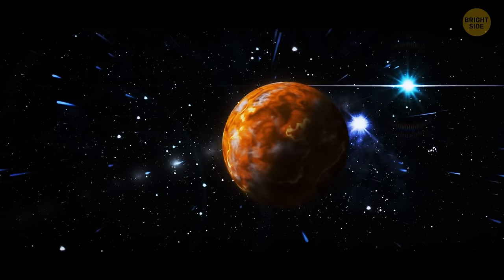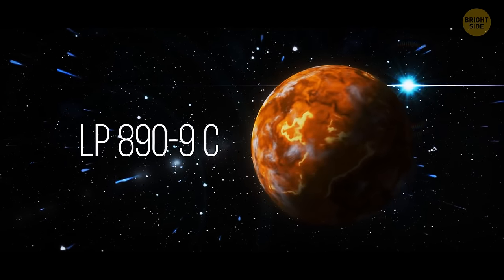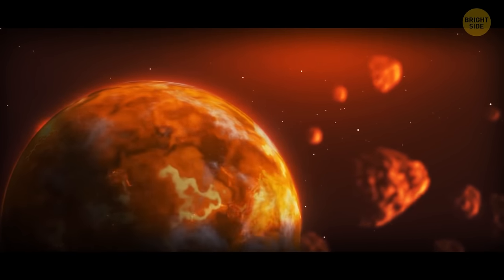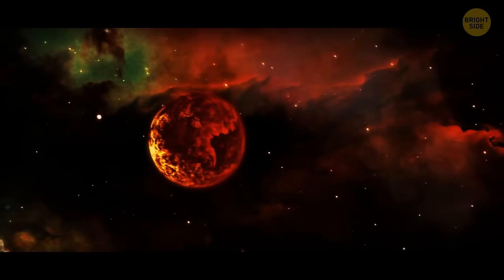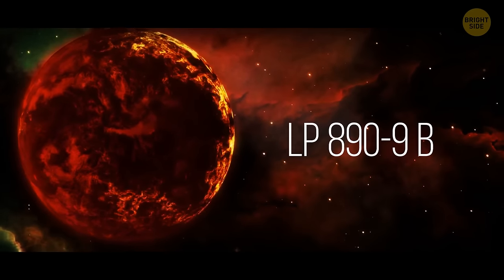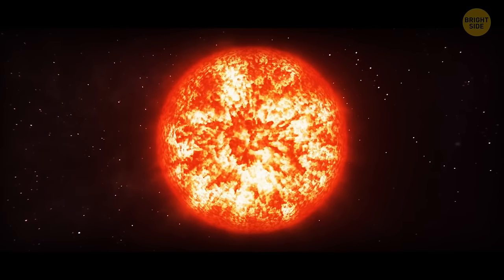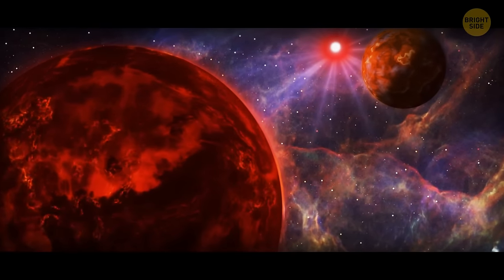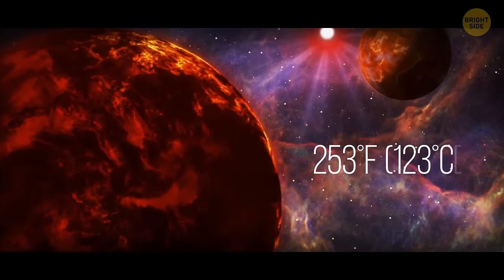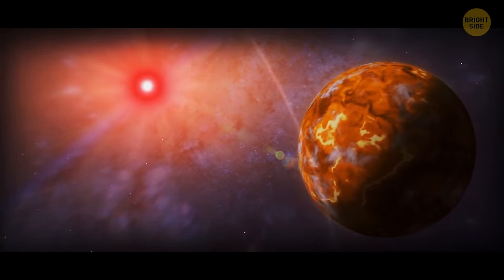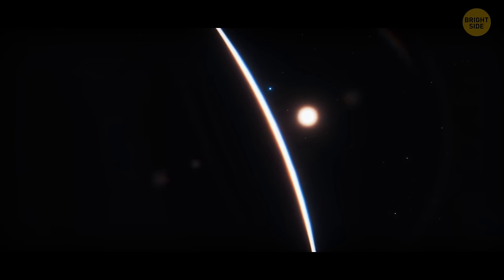The last planet on our list is LP 890-9C, which I'll call Bob. This super-Earth, located about 98 light-years away, is roughly 40% larger than our home planet. Moreover, it has a twin, which I'll nickname Ray, which is up to 75% larger than Earth. More space is always good, right? The two planets orbit around the red dwarf star. Unfortunately, Ray is quite hot to the touch, with an estimated temperature of 253 degrees Fahrenheit. So, don't touch. Its sibling, Bob, is located in the habitable zone of its star, making it a prime candidate for the potential of life.